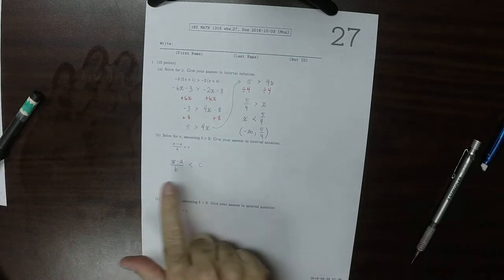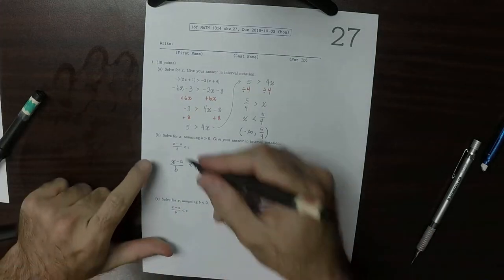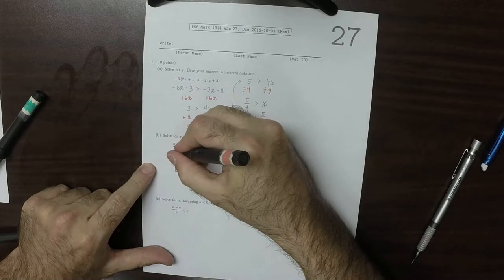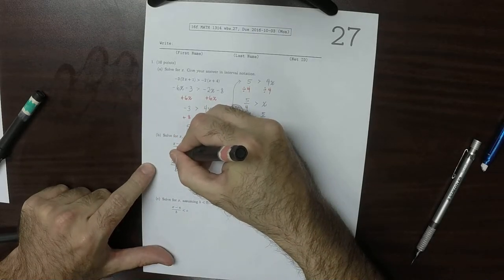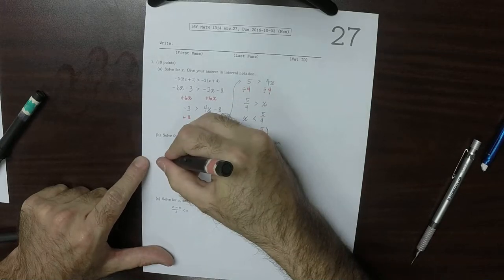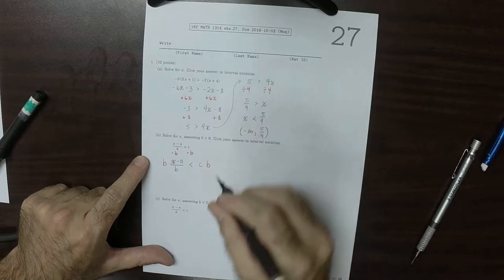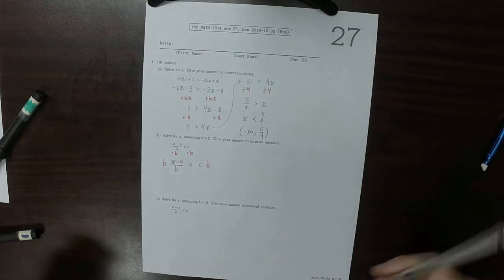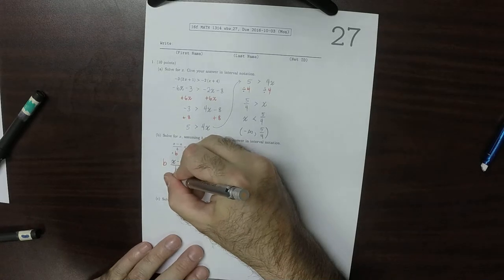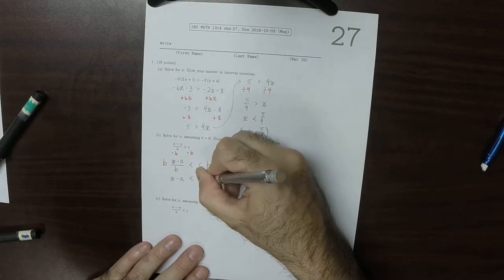And what we're going to do is multiply both sides of the inequality by b. So multiply the left by b, multiply the right by b. And because b is positive, that means that the direction of the inequality does not change. So this would be x minus a is less than bc.